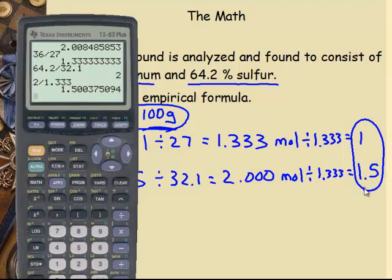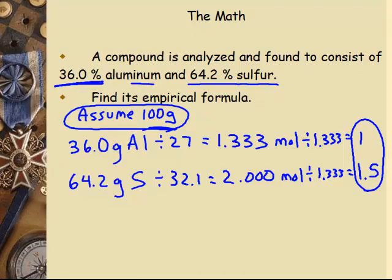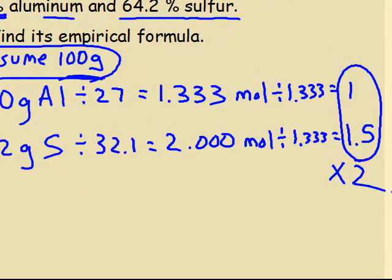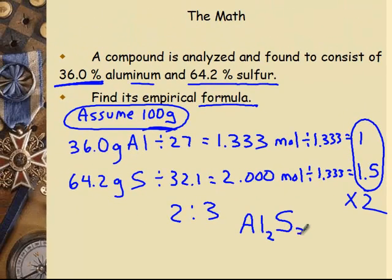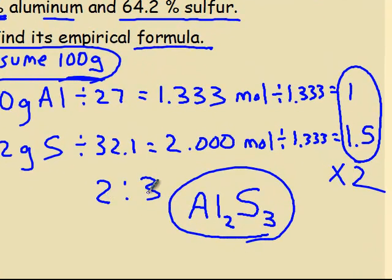Again, we're at the step now where we've got to evaluate that answer. Is it a whole number, or is it a half, or is it a quarter? The other ones are a third, or two thirds, or three quarters, but this one is 0.5. So I'm going to multiply both of those by 2 and make it a 2 to 3 ratio. So then the formula, Al2S3, a 2 to 3 mole ratio of aluminum to sulfur. And again, it's ionic, minus 2 plus 3, so you can see it worked out again.